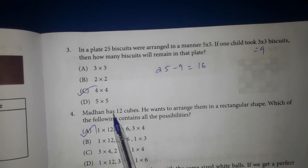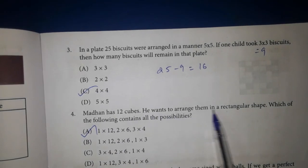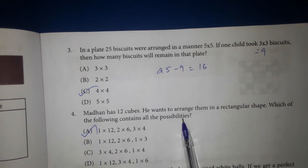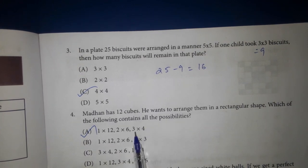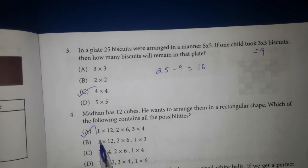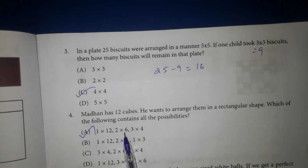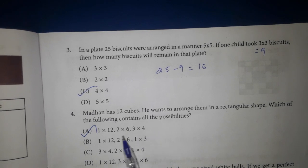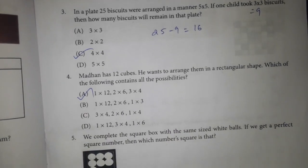4th one. Madhan has 12 cubes. He wants to arrange them in a rectangular shape. Which of the following contains all the possibilities? Let's say 12. 1 x 12 is 12. 6 x 2 is 12. 3 x 4 also is 12. Answer option A. 5th one.